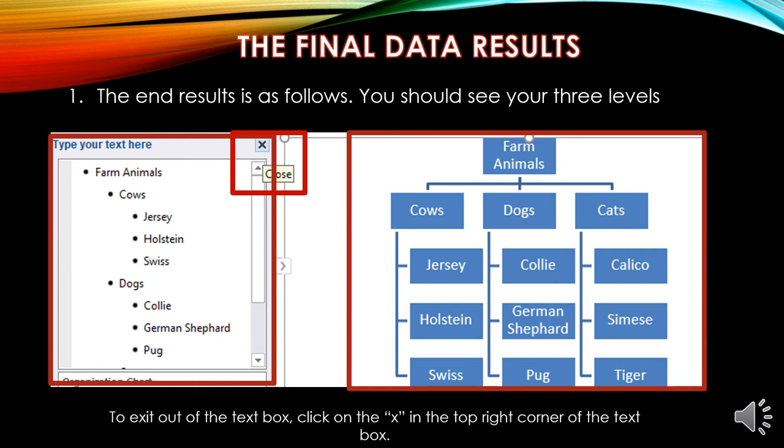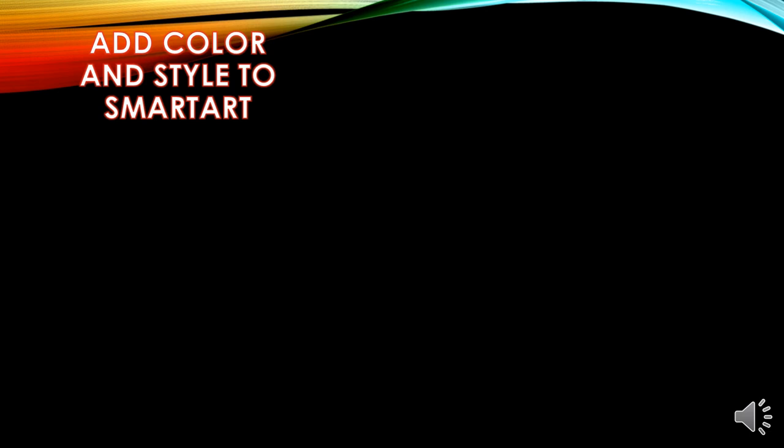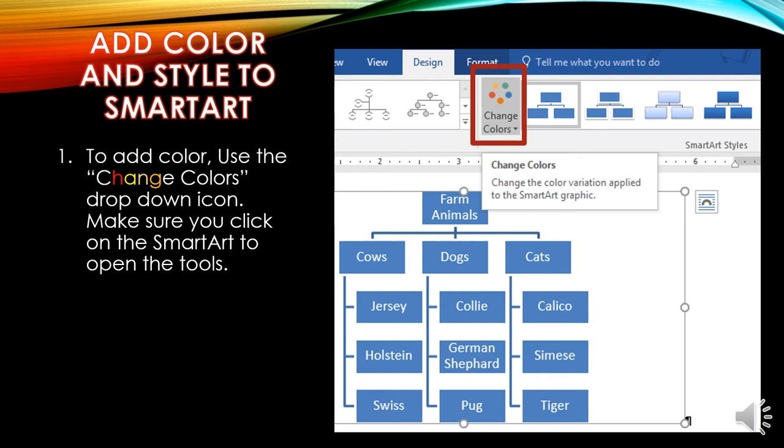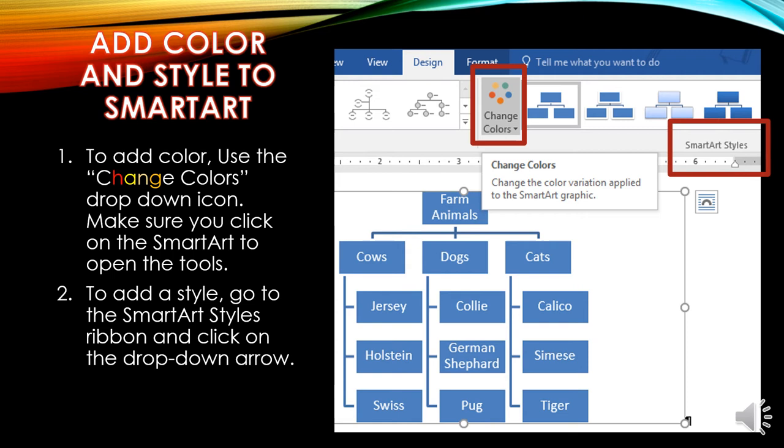To exit out of the text box, click on the X in the top right corner. To add color to SmartArt, use the Change Colors drop-down icon — make sure you click on the SmartArt to open the tools. To add a style, go to the SmartArt Styles ribbon and click on the drop-down arrow.